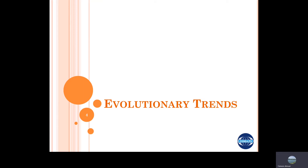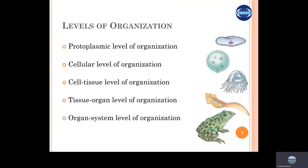Along this evolutionary pathway, there are a few common things present in all animals, built upon early existing characteristics — these are called evolutionary trends. The first is the level of organization, which tells us the number of cells present in an organism and how they are organized and performing their functions. The concept of division of labor in the animal body comes under this — the more the division of labor and dependence between cells, the higher the organization required.